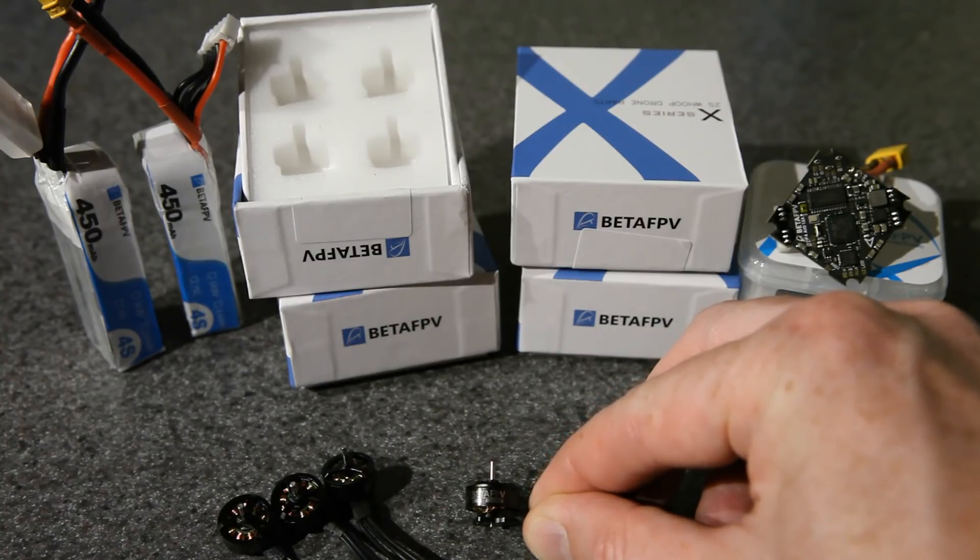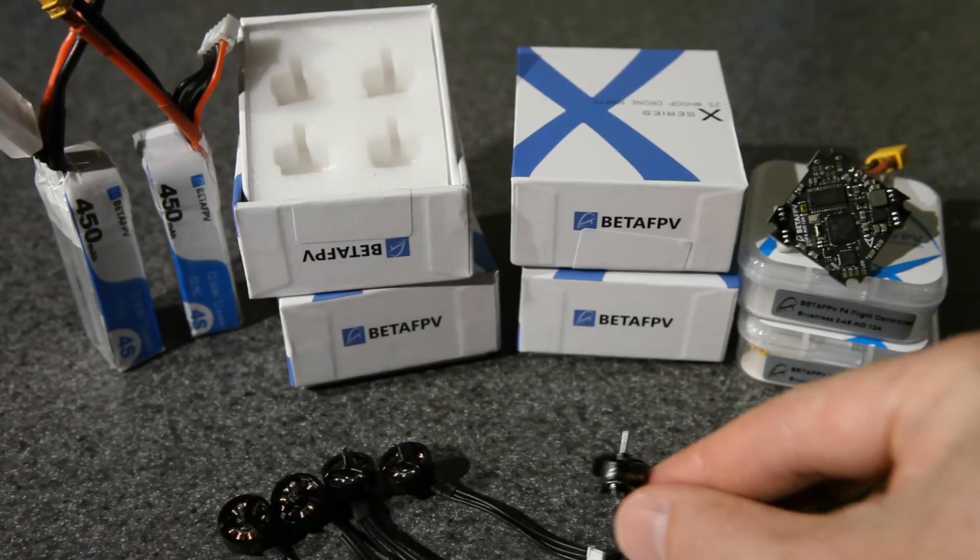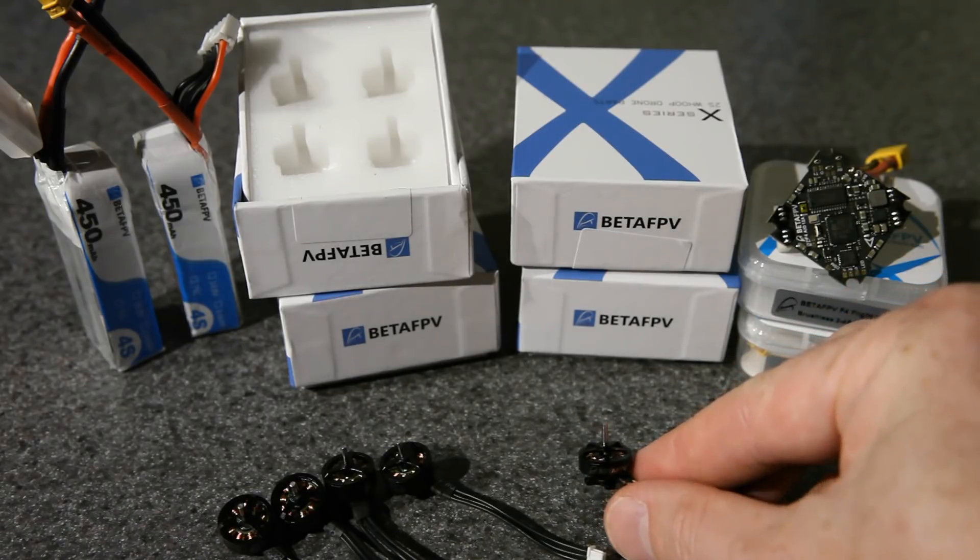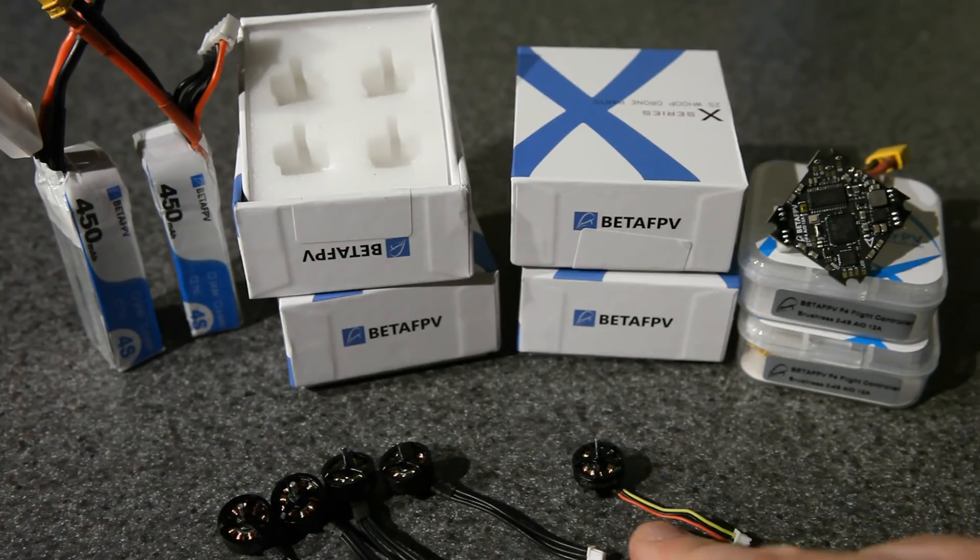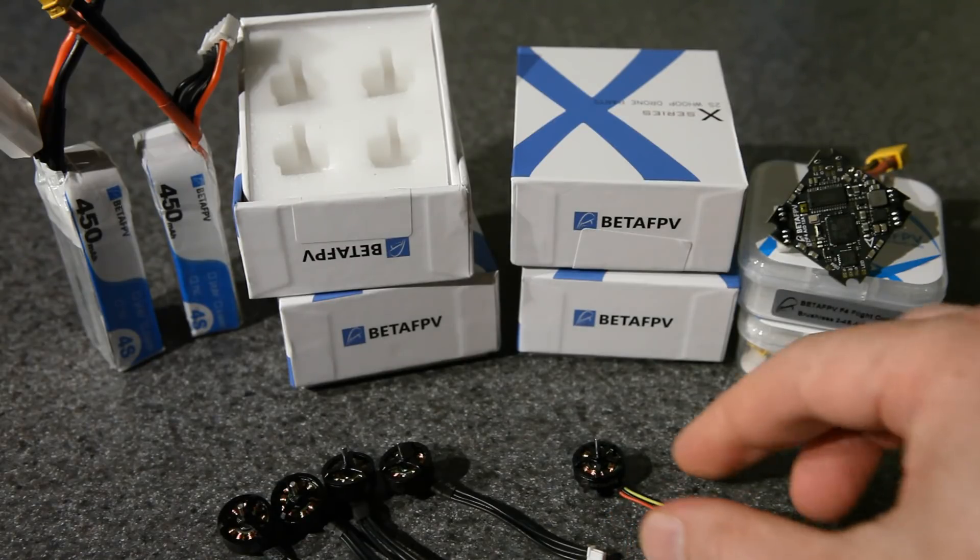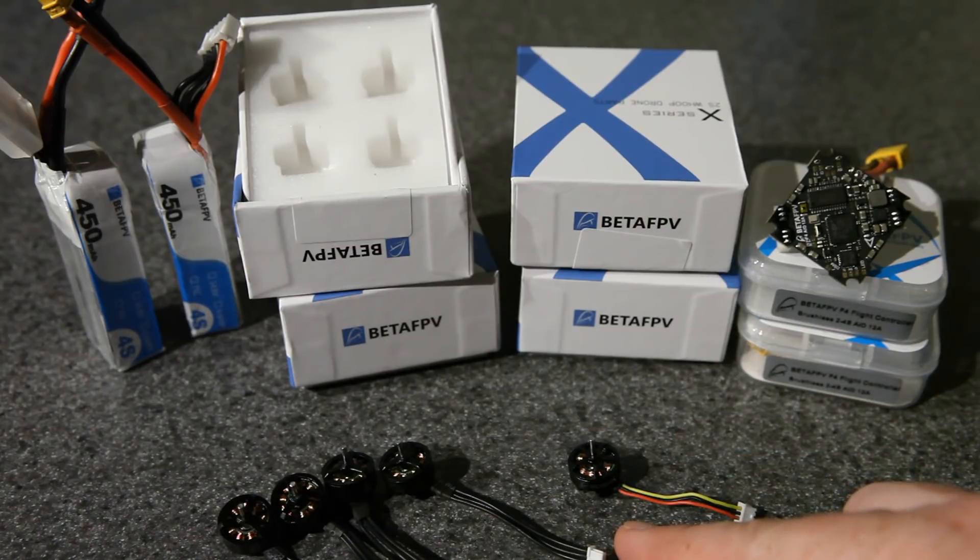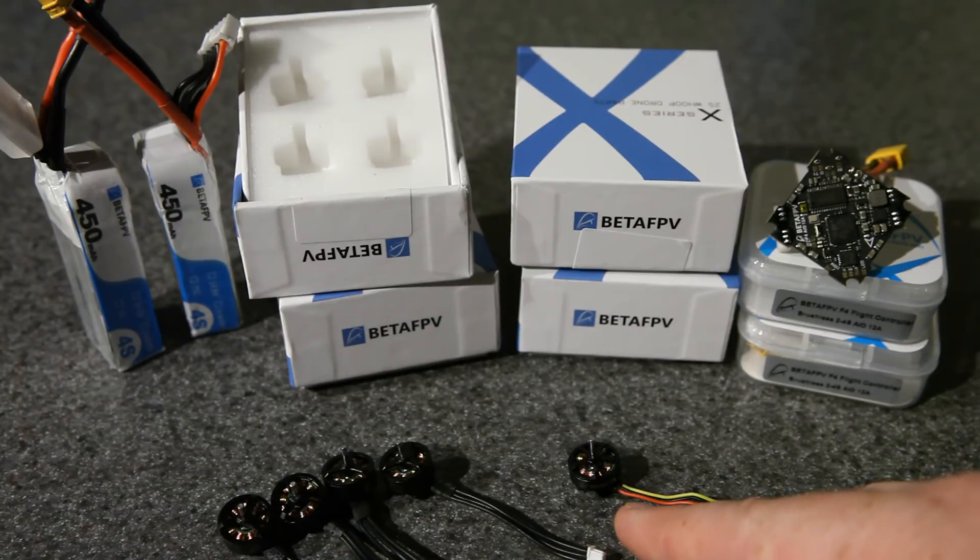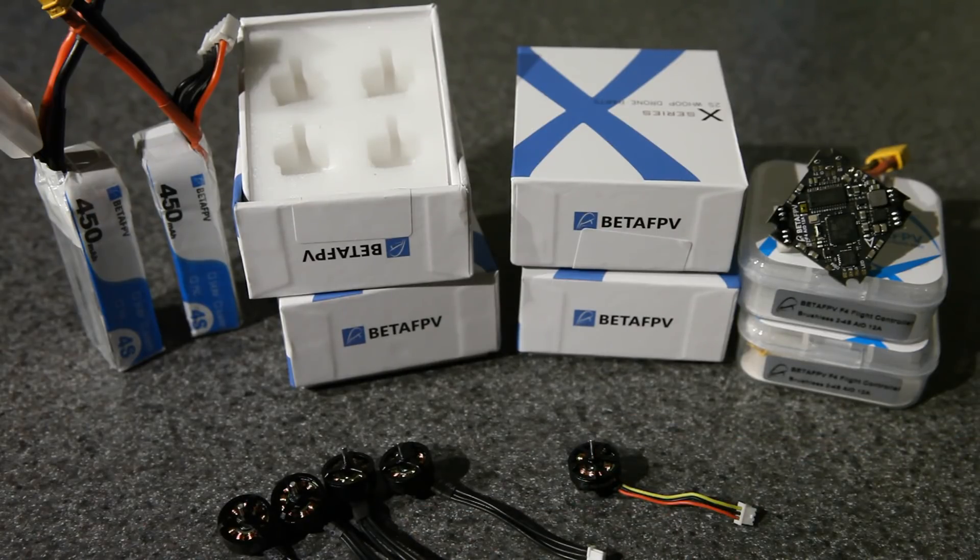It's 1103 8000 kV. That's significantly lower than this 11000 kV motor that we've been using. This first came out on the Beta 75X, and I've been having a lot of fun flying these on my Shutterbug 85 builds. This is a great little motor, and at first I thought they were just going to lower the kV and keep other things mostly the same. But there's actually a lot of differences between these motors, and that's what I want to show you today.